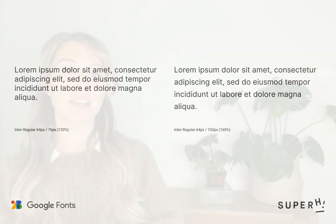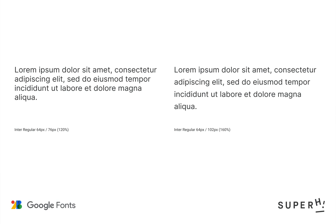We've also got two examples of copy text here. In the first example, the line height is 1.2 times the font. Here we can see that the text feels a bit too tight, which makes it a little tough to read through. Whereas in the second example, the line height is set to 1.6 times the font. In this example, the text is breathing a bit better and easier to read, while still maintaining a sense of togetherness. The reader can recognise this to be one paragraph easily.